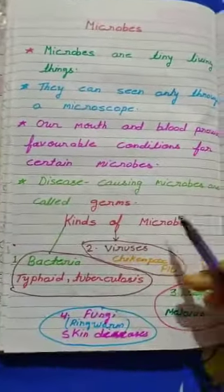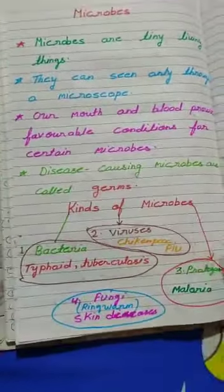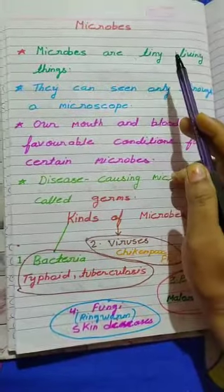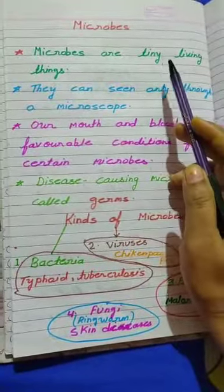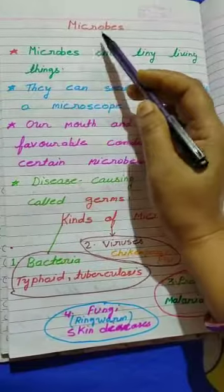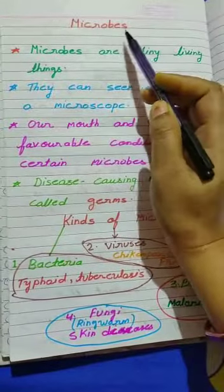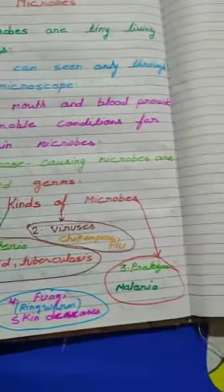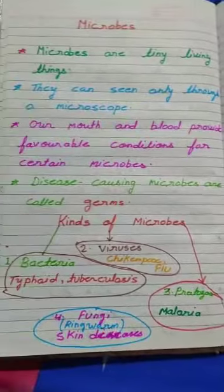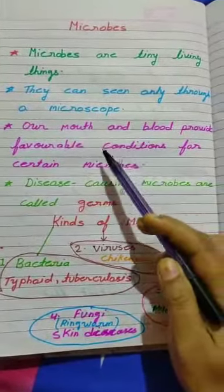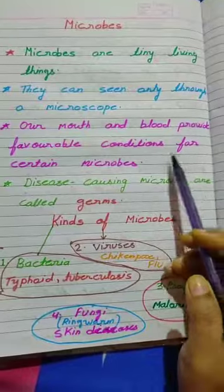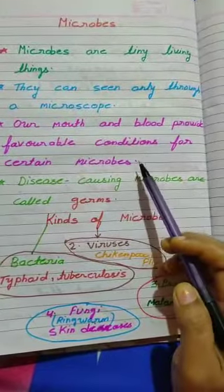I am explaining about microbes. Our chapter name is teeth and microbes. Microbes are tiny living things. They can be seen only through a microscope. Our mouth and blood provide favorable conditions for certain microbes.